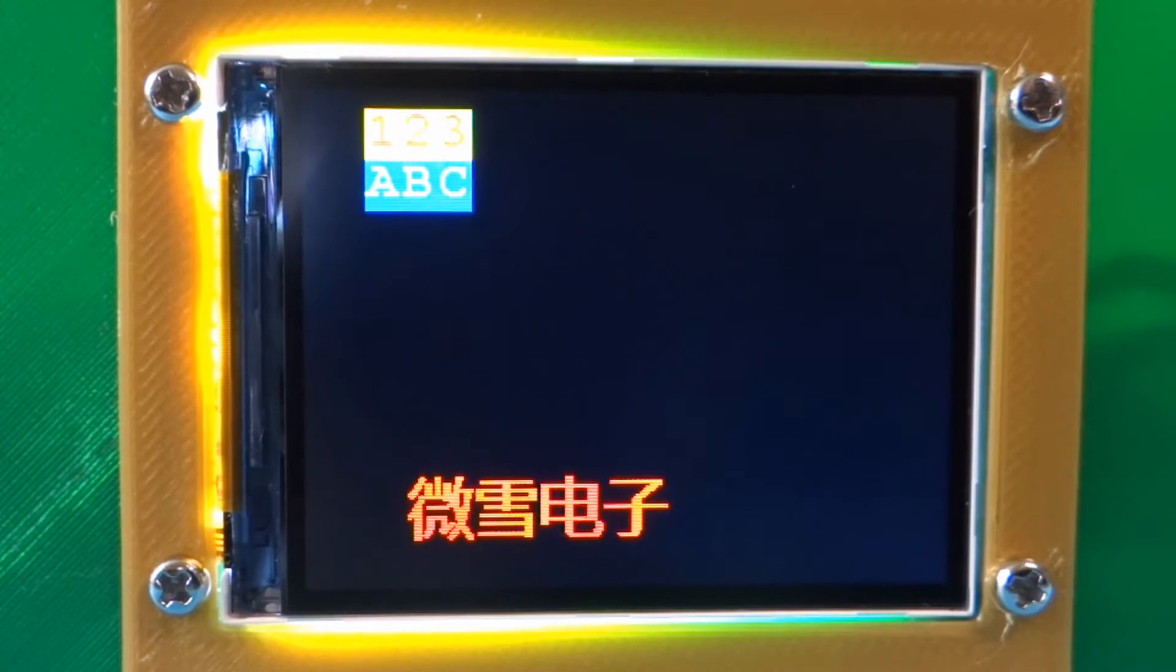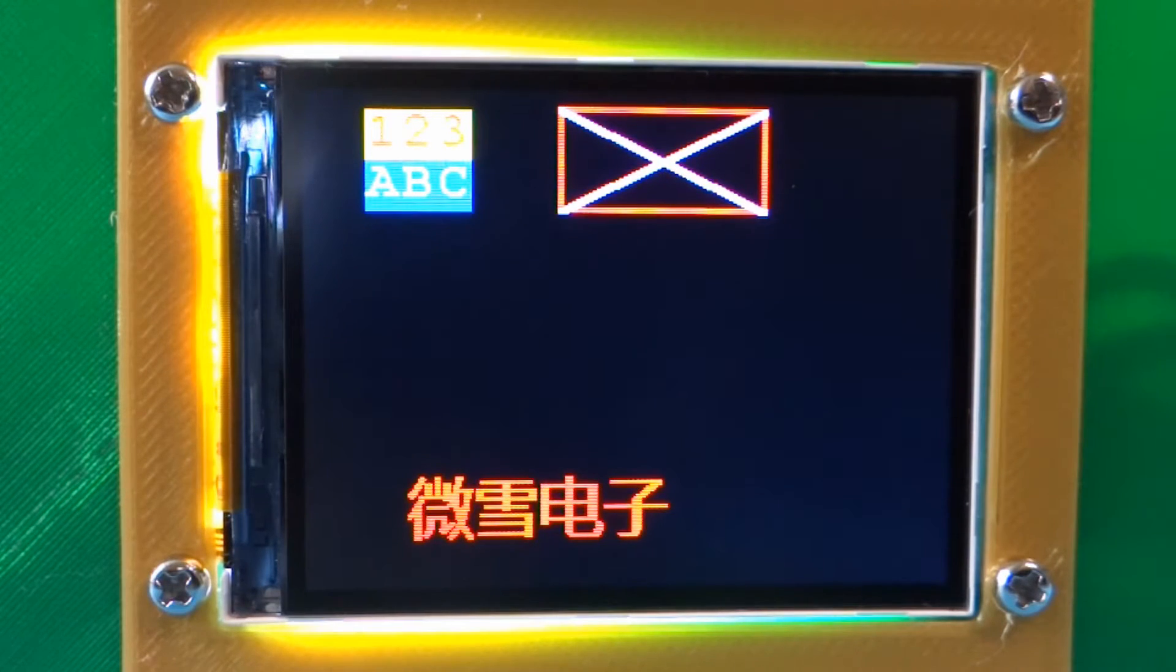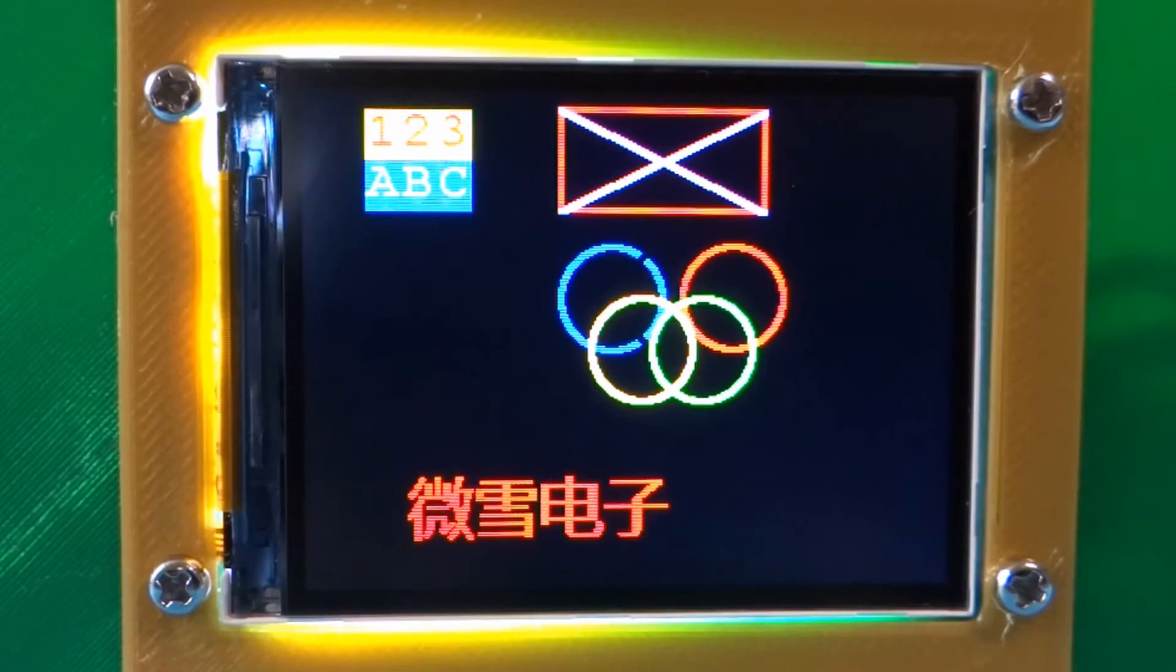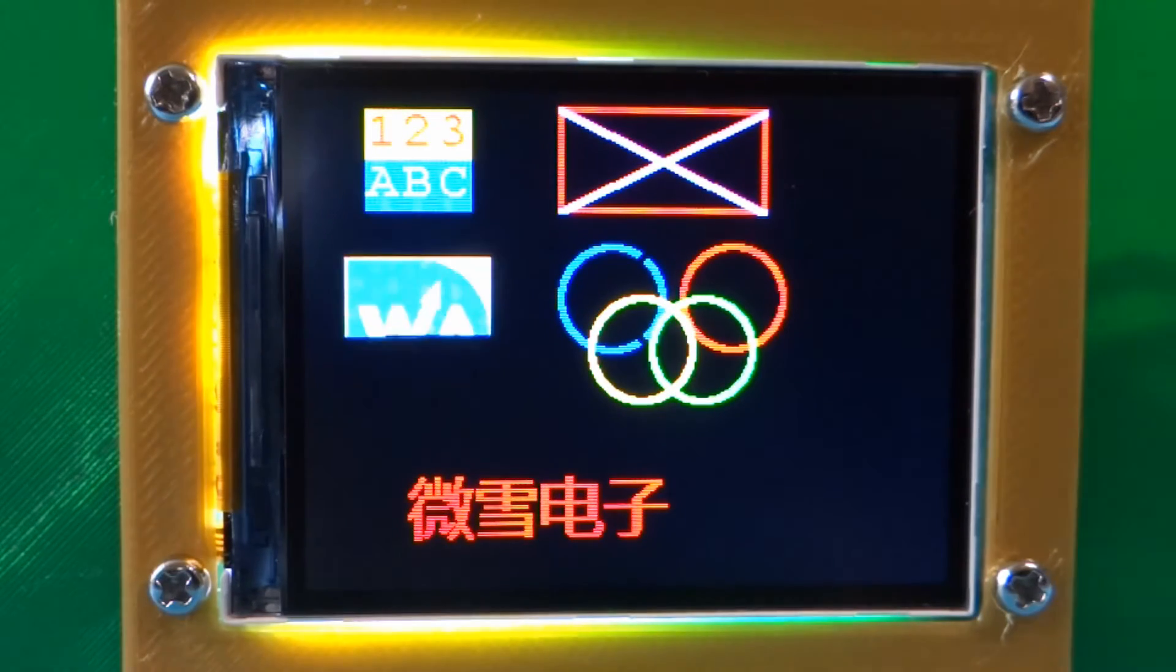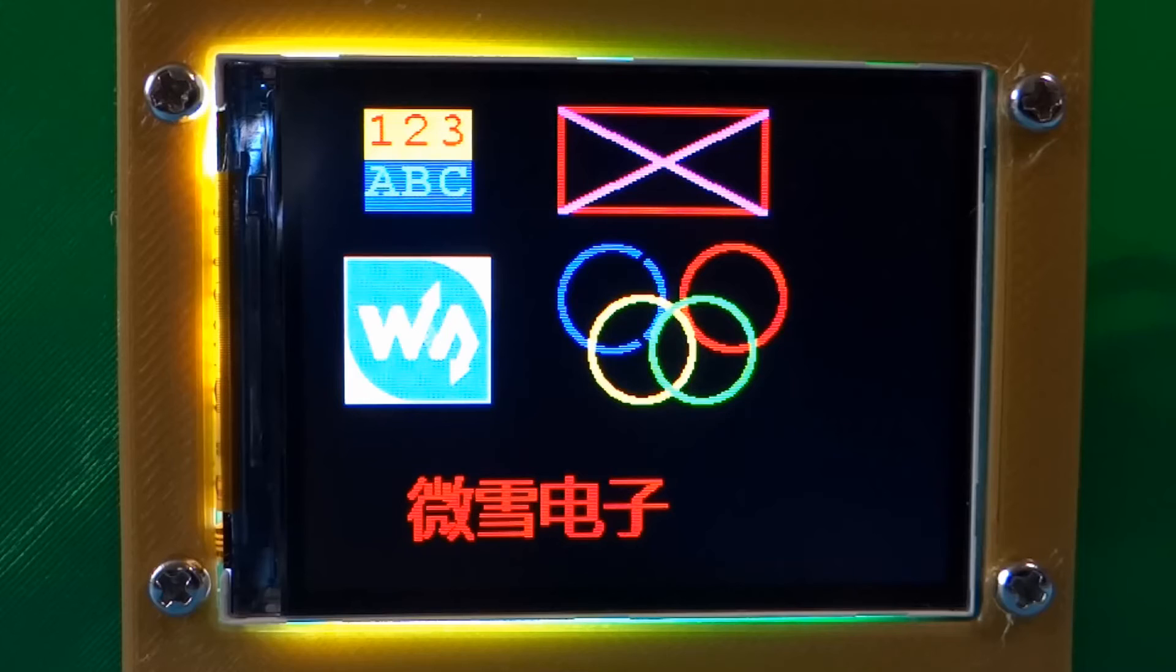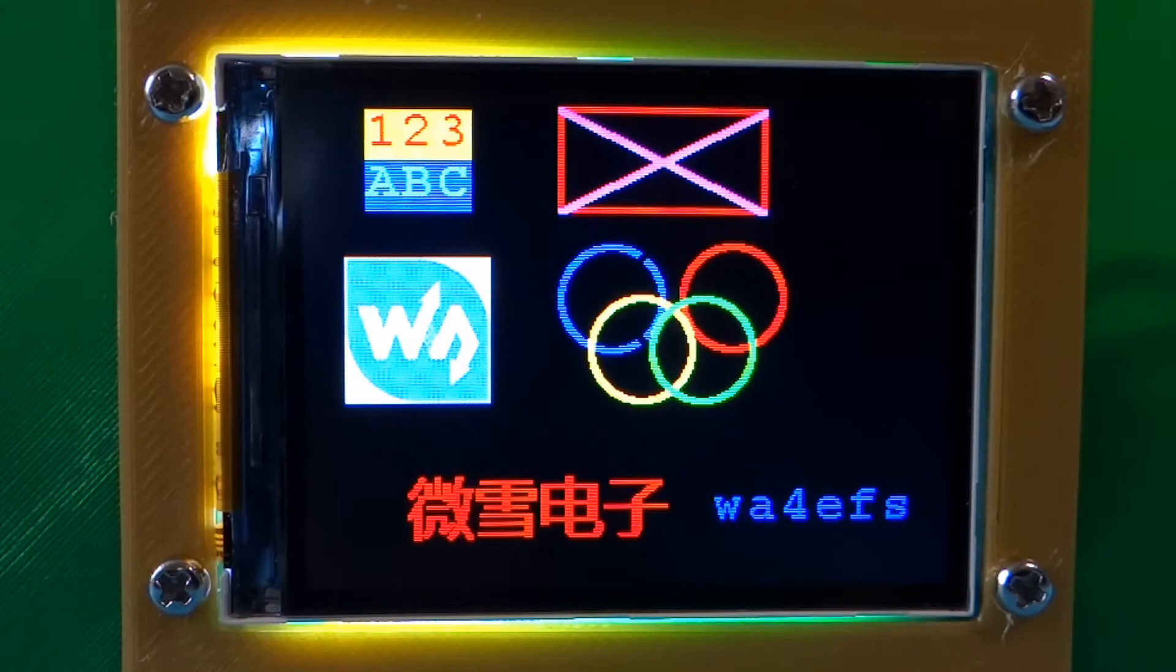The WaveShare 2-inch color LCD module came from Amazon, $14.75 US, including the connector and wires. This was an experiment that didn't go as well as anticipated. A different display module, one with a faster response time, would have been preferable.